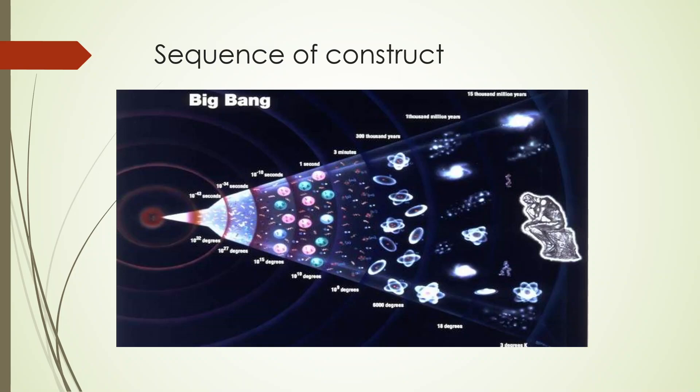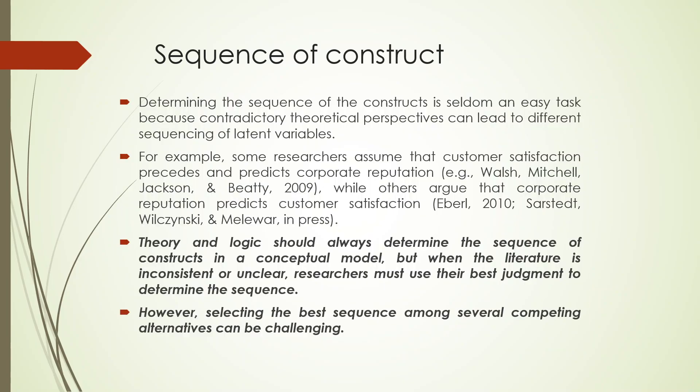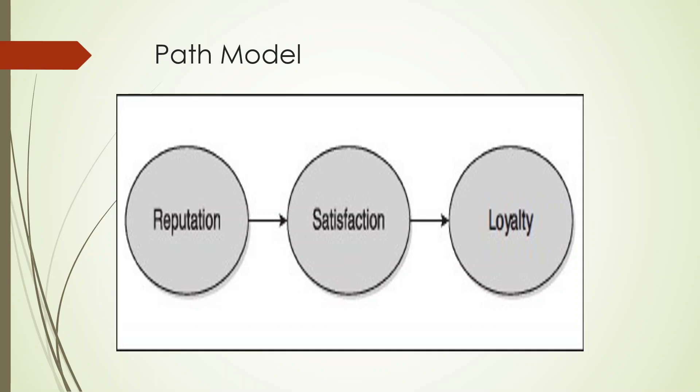Now there is something which is known as sequence of construct in Smart PLS which you have to maintain: what comes first then later on. We have to maintain the sequence of construct in our analysis. So if I represent this thing in form of, say for example, this is my path model: reputation is going to affect satisfaction, satisfaction is going to affect loyalty. Now here there is a concept of endogenous and exogenous. Exogenous means more like an independent variable. So reputation is exogenous, loyalty is endogenous. Satisfaction at the same moment of time is endogenous also and exogenous also.